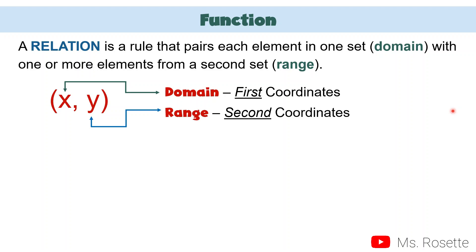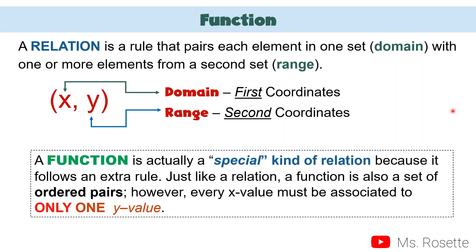How can we relate this to function? When we say function, it is actually a special kind of relation. Function is also a relation. We call it special because it follows an extra rule. Just like a relation, function is also a set of ordered pairs. However, please remember this: every x value must be associated to only one y value. It means x must only have one y partner — only one y value.